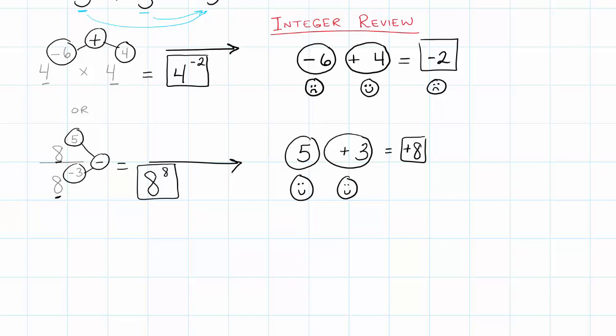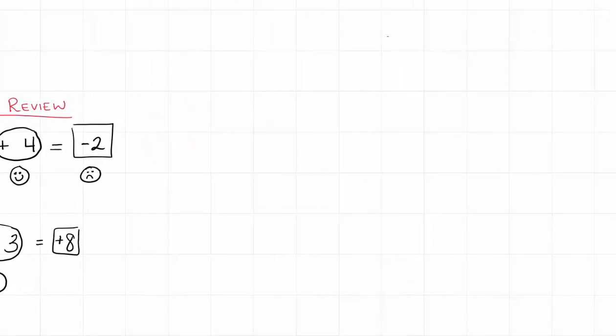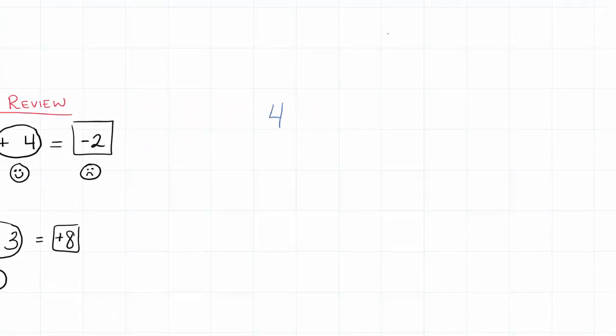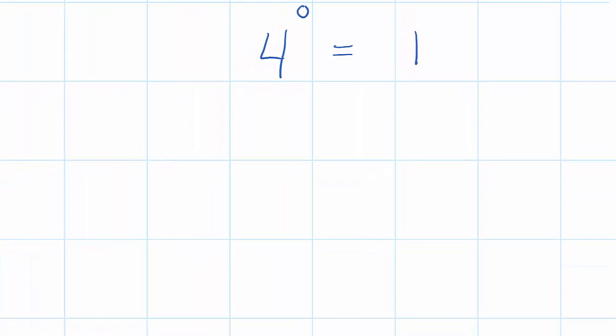That wasn't too bad. Let's talk real quick about something that we're not used to seeing. What if we saw a base number, like 4, raised to the power of 0? What we have to understand is that any number raised to the power of 0 is going to change our base to the number 1. That's it.